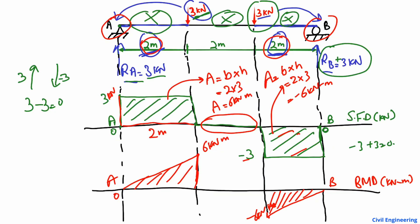Note that the bending moment diagram is a first-degree line, one degree higher than the shear force diagram, which was a zero-degree (constant) line. To summarize: find support reactions, draw the shear force diagram, then find the area under the SFD to get the bending moment diagram. Thanks for watching — please subscribe for more civil engineering videos.